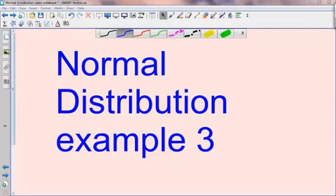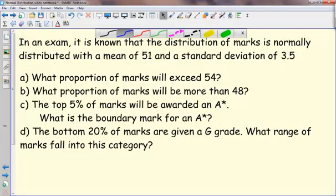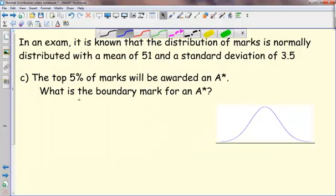In this third example, we're going to look at part C of this question. It says the top 5% of marks will be awarded an A star. What's the boundary mark for an A star?